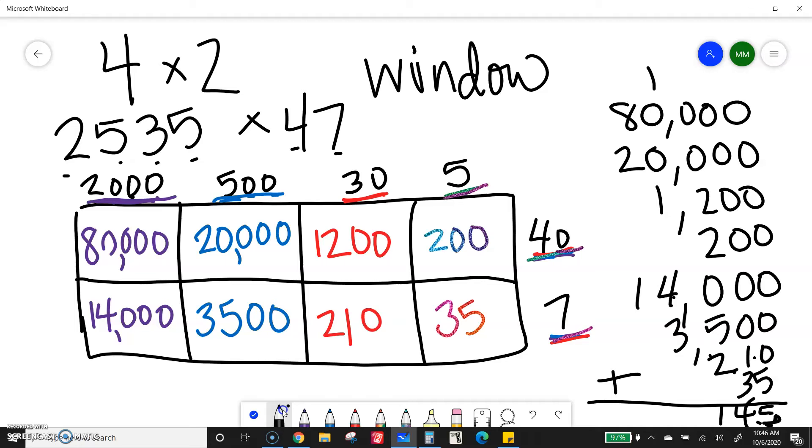1, 2, plus 4 is 6. 7, 8, 9. And then 8 plus 2 is 10, plus 1 is 11. So I get 119,145 for that problem.